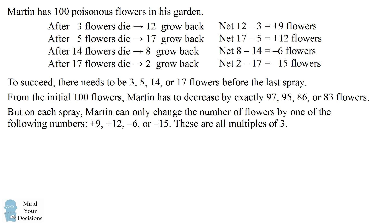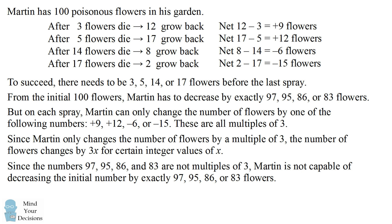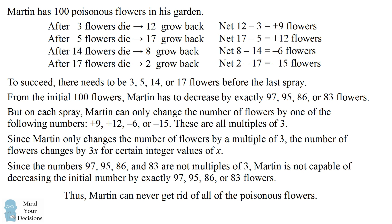And there's a pattern to these numbers — they are all multiples of 3. Since Martin only changes the number of flowers by a multiple of 3, the number of flowers has to change by 3x for certain integer values of x. Now, since the numbers 97, 95, 86, and 83 are not multiples of 3, that means Martin is not capable of decreasing the initial number by exactly any of those numbers. Therefore, we can conclude Martin can never get rid of all of the poisonous flowers.